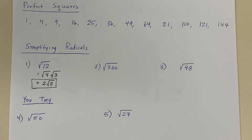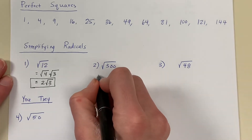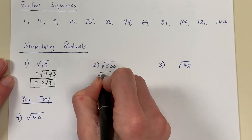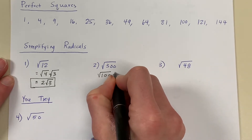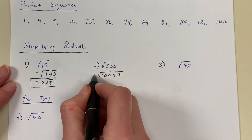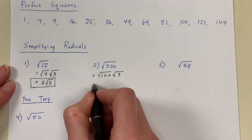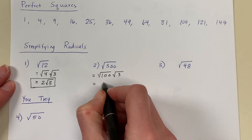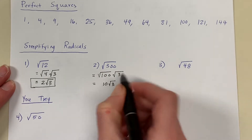In problem number 2, I have the square root of 300. To simplify the radical, I'm looking for the largest perfect square that divides into 300, and that would be 100. So I'm going to rewrite 300 as the square root of 100 times the square root of 3. 100 times 3 is 300, so radical 100 times radical 3 is radical 300. Now I'm going to continue simplifying. The square root of 100 is 10, so I can rewrite this as 10 radical 3.